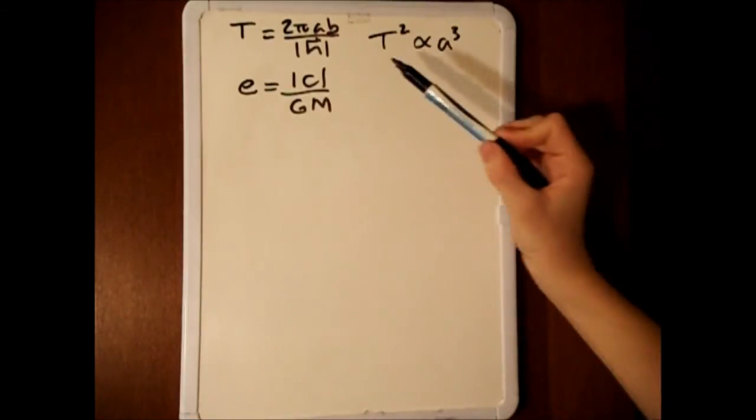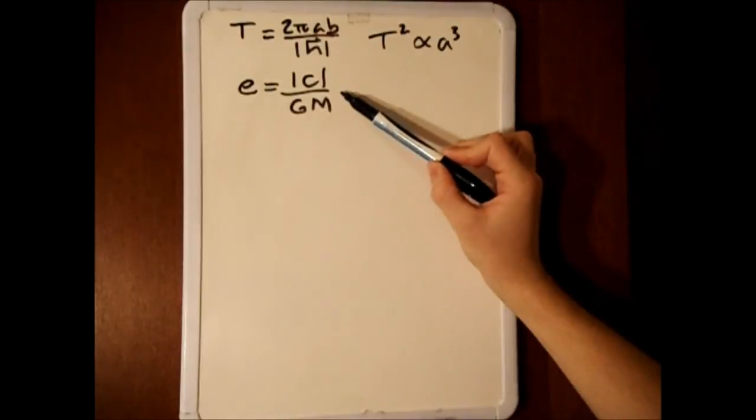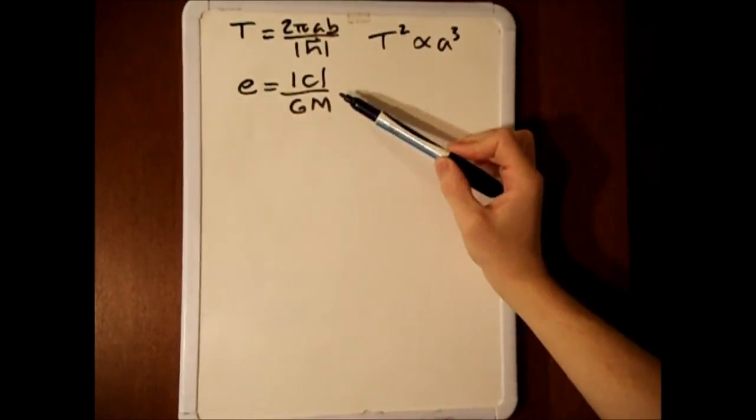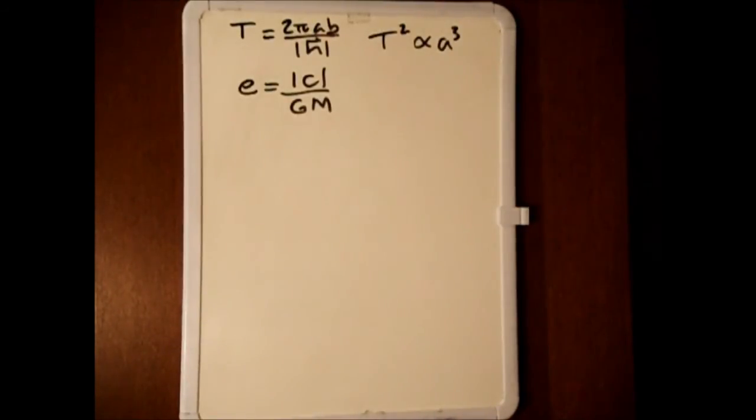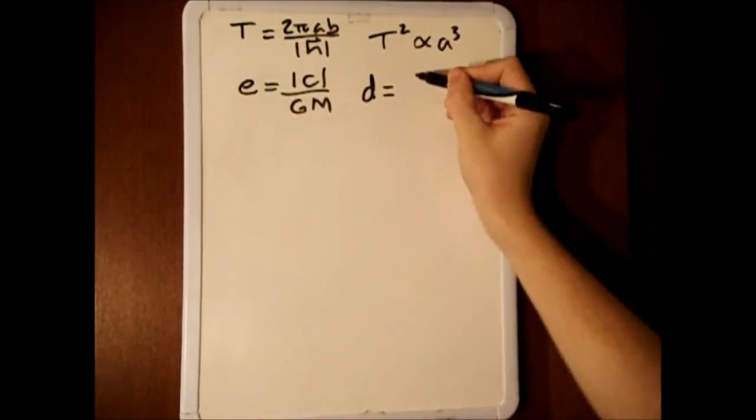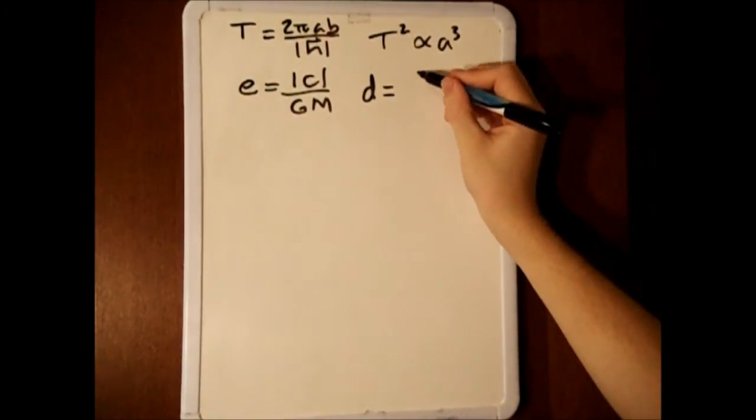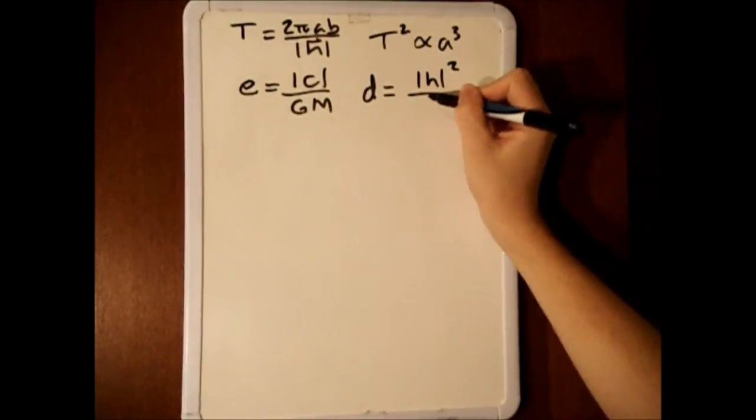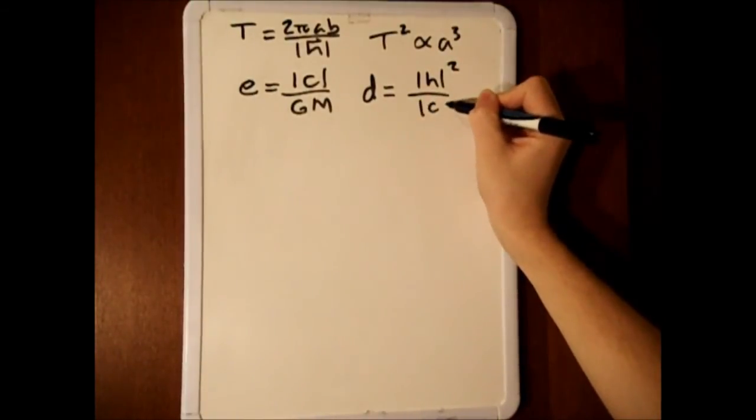Let's go out on a limb and define the eccentricity of an elliptical orbit as the magnitude of c divided by GM, and d as the magnitude of h squared divided by the magnitude of c.